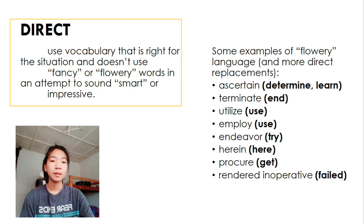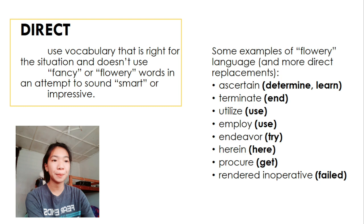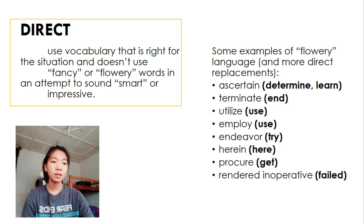Direct. Use vocabulary that is right for the situation and doesn't accuse fancy or flowery words in attempt to sound smart or impressive. Here are some examples of flowery language and more direct replacement. Instead of ascertaining, you should use determine or learn. Instead of terminate, use end, utilize, use use, and devour, use try, herein, here, procure, get, rendered inoperative, fail.